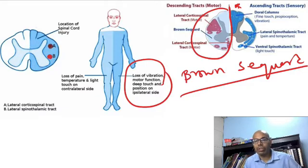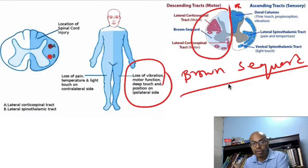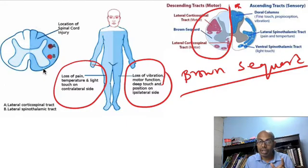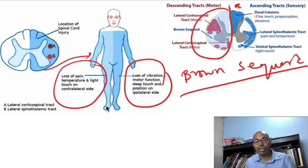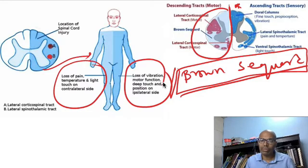In Brown-Séquard syndrome, there is ipsilateral motor function loss and ipsilateral vibration and proprioception loss, because the dorsal columns also do not cross over. However, pain and temperature loss occurs on the contralateral side, two segments below the level of injury — the level at which the spinothalamic tracts cross over. Literature says Brown-Séquard syndrome recovers very well with good prognosis. This is the third most common incomplete spinal cord injury.